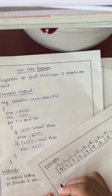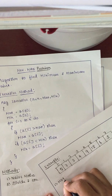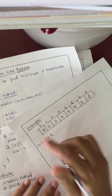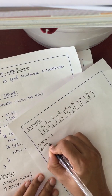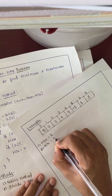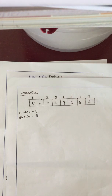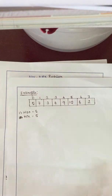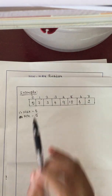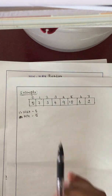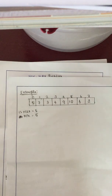So for the array [5, 7, 3, 4, 9, 12, 6, 2], the first element 5 is fixed as both max and min. So the current max element is 5 and the current min element is also 5. After comparing all the elements, whatever falls under max and min will be considered the maximum and minimum element. Now we are going to compare all other elements against the current max and current min.